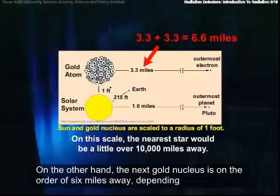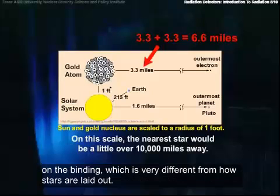On the other hand, the next gold nucleus is on the order of 6 miles away, depending on the bonding, which is very different from how stars are laid out.